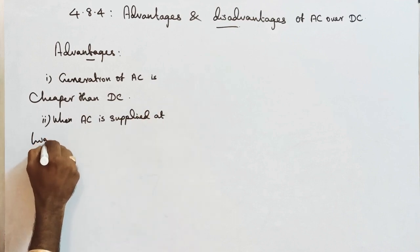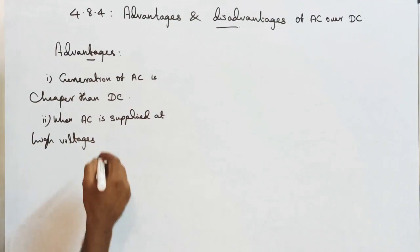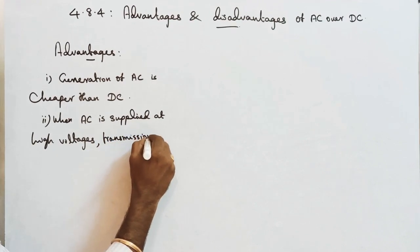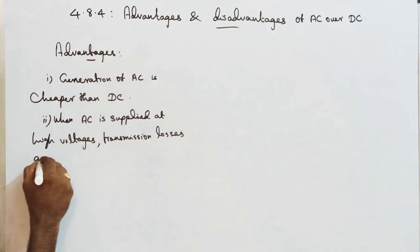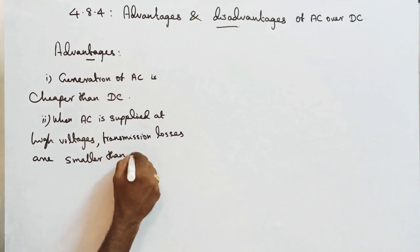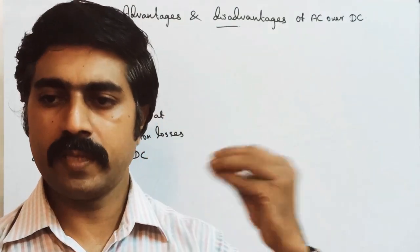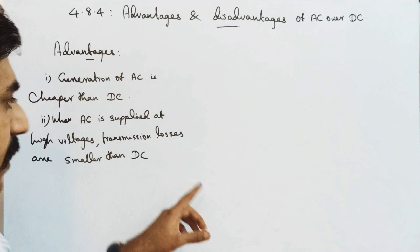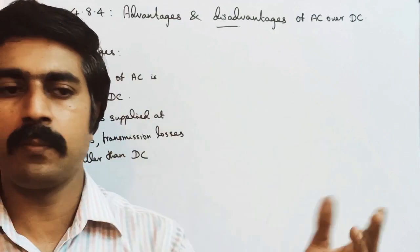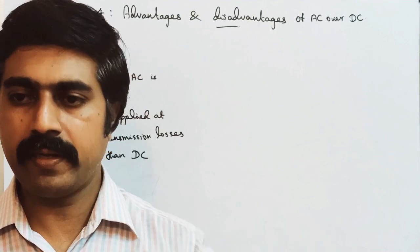At high voltages, when AC is applied, transmission losses are smaller than DC. Power is the product of current and voltage, so transmitting at high voltage reduces transmission losses compared to DC.